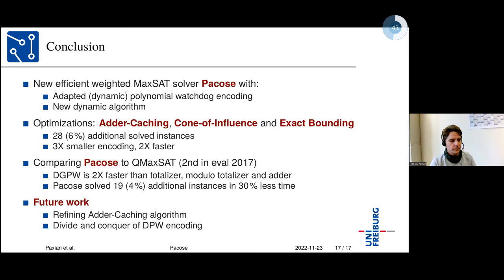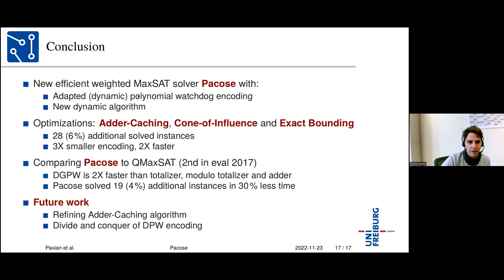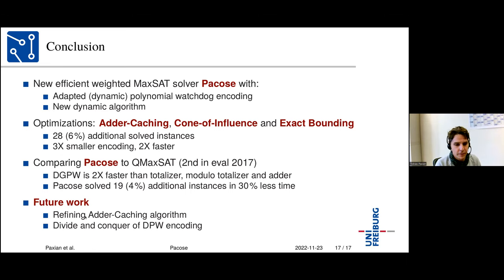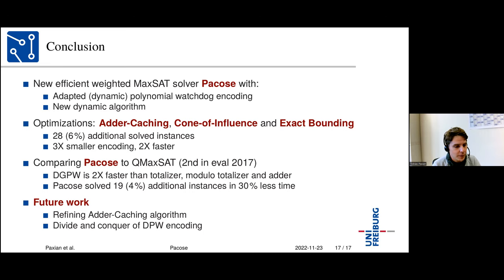Conclusion of part one: the dynamic polynomial watchdog encoding and three optimizations were introduced, achieving a three times smaller encoding, two times faster solving, and 19 additional instances solved compared to QMAXSAT, also two times faster. Future work includes refining the adder caching algorithm and exploring a divide-and-conquer variant of the dynamic polynomial watchdog encoding, though the latter moves the encoding closer to the binary adder in behavior.